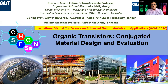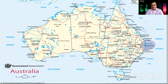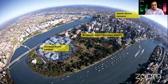Today I'm going to talk about organic transistors and how these organic transistors are important technology for future flexible and printed electronics, and how it is also moving towards wearable and stretchable electronics. I want to give a quick snapshot about Australia — Brisbane city is located on the eastern, northeast part, and our university campus is situated along the Brisbane River.